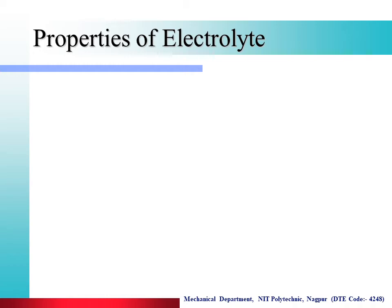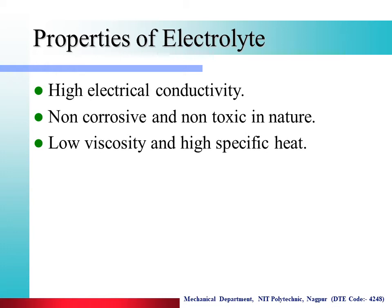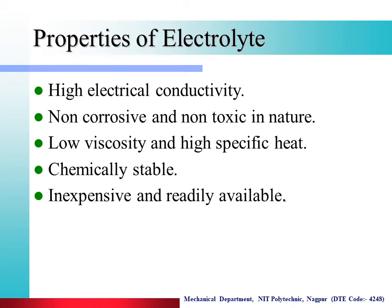Properties of the electrolyte used in Electrochemical Machining: First, high electrical conductivity — it should be a good conductor of electricity. Second, non-corrosive and non-toxic in nature — it should not be corrosive or poisonous. Third, low viscosity and high specific heat. Fourth, chemically stable. Fifth, inexpensive and readily available — it should not be costly and should be easily available.